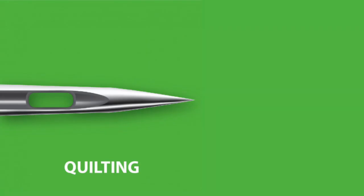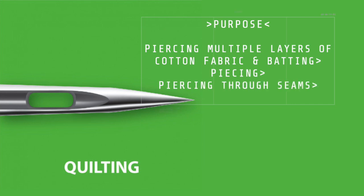The quilting needle is ideal for piercing and quilting layers of cotton fabrics with wadding or batting in between, or even when piecing and going through several seams. It has a strengthened shaft which helps reduce needle deflection as the needle goes through multiple layers. The quilting needle is perfect because of that strength and sharp point.